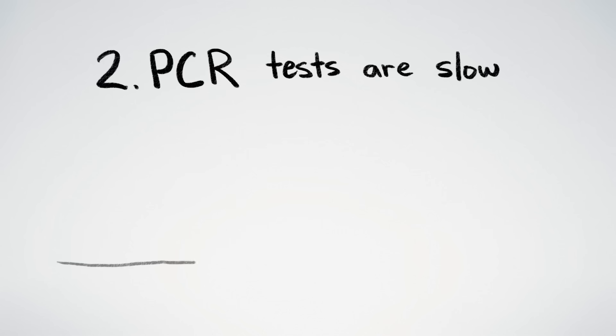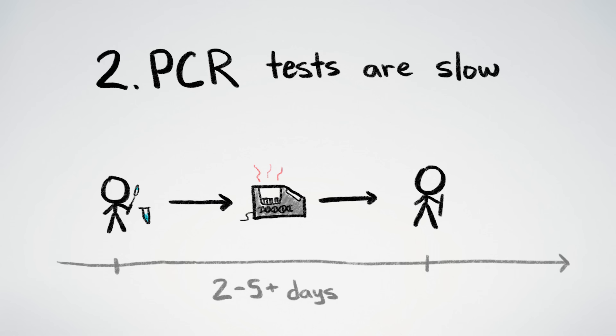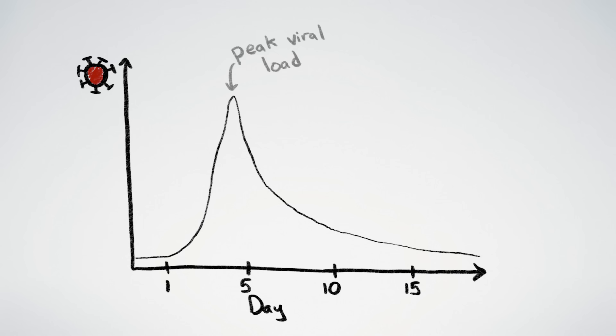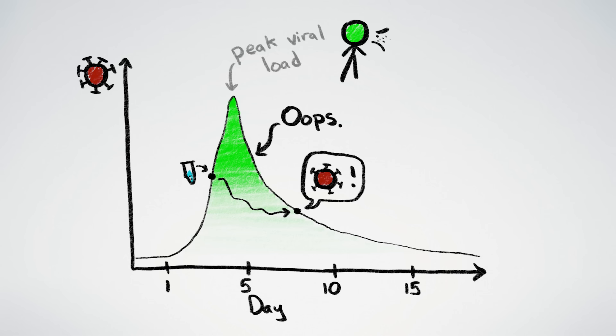Second, PCR tests take time, usually a couple of days for results to come back from the lab. And here's what the typical viral load in an infected person looks like over time. They're most infectious around the peak, and their infectiousness declines afterwards. So if test results take a few days to come back, chances are you miss the peak, which means missing the window of time during which the person is most likely to infect other people.